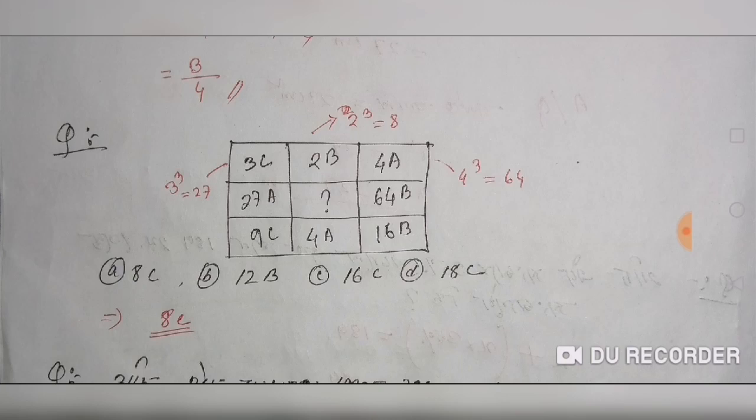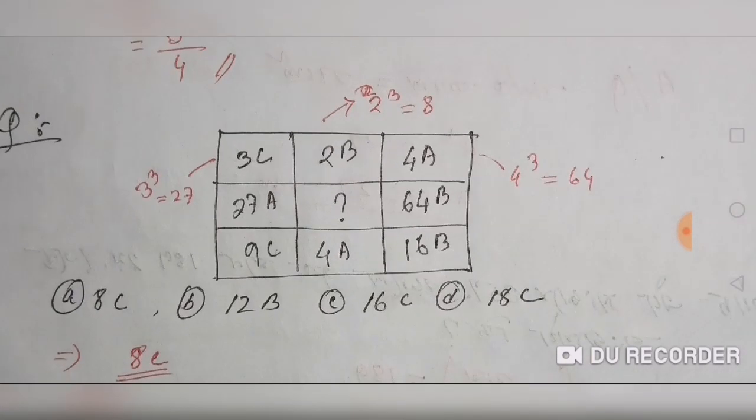The first value is 3C. What is 3? It's 7. It's 4. It's 64.